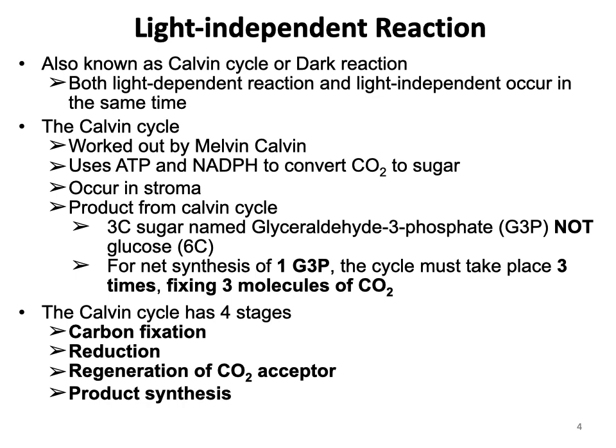The Calvin cycle is also known as dark reaction or light independent reaction. As the name suggests, the reaction is not directly driven by light. This reaction takes place in the stroma of the chloroplast, where sugar will be finally synthesized with the aid of ATP and NADPH. These two intermediate molecules are synthesized in the light reaction.